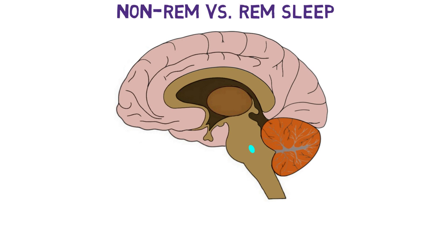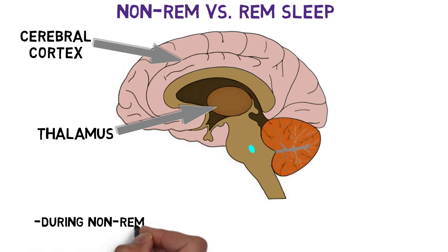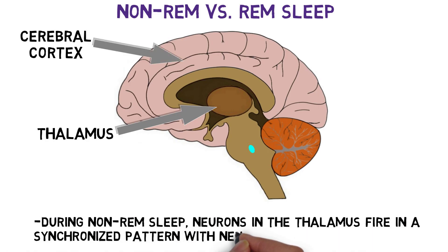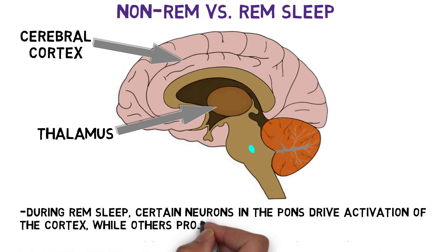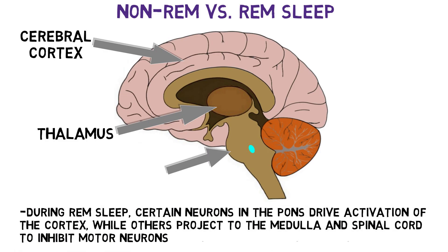The generation of non-REM and REM sleep also involves distinct patterns of neural activity. During non-REM sleep, neurons in the thalamus fire in a synchronized pattern with neurons in the cortex, which is thought to reduce the transmission of sensory signals, in effect disconnecting the cortex from the outside world. During REM sleep, certain neurons in the pons drive activation of the cortex, while others project to the medulla and spinal cord to inhibit motor neurons and cause the paralysis characteristic of REM sleep.